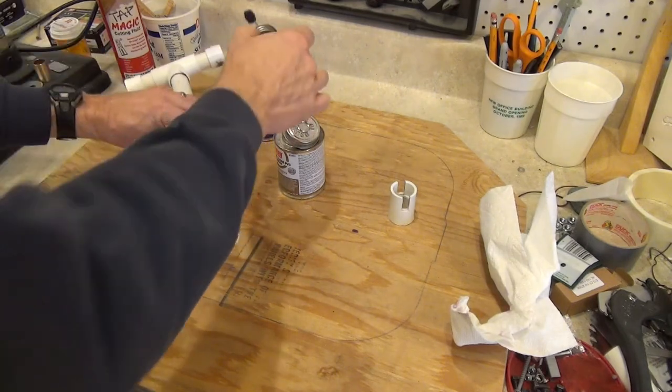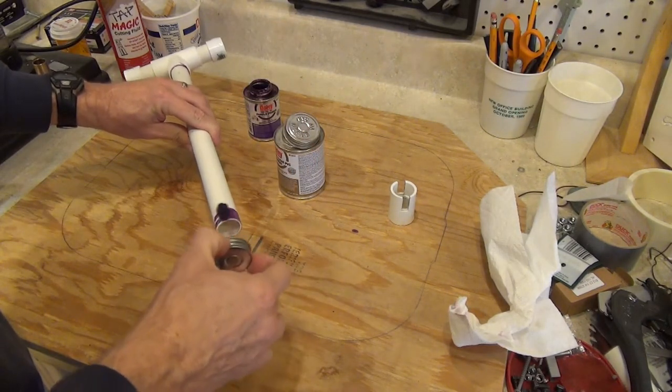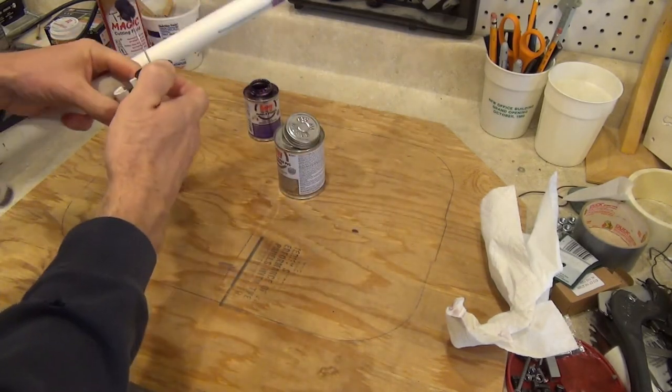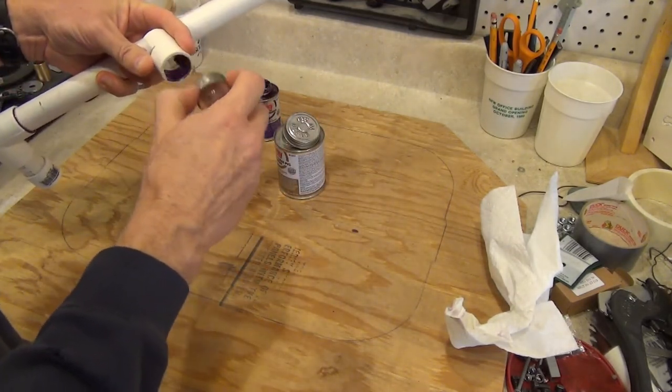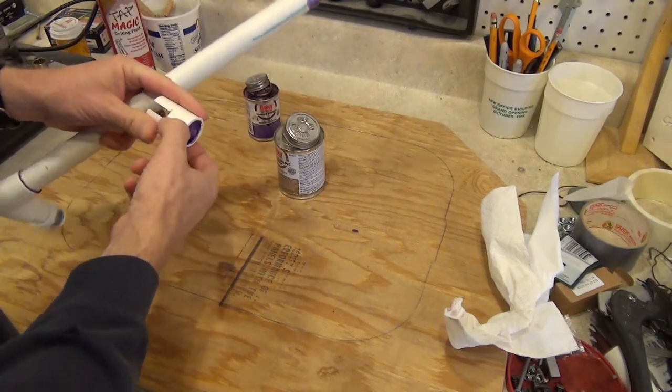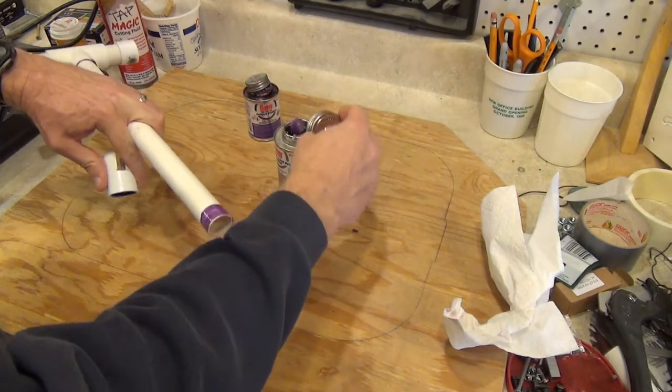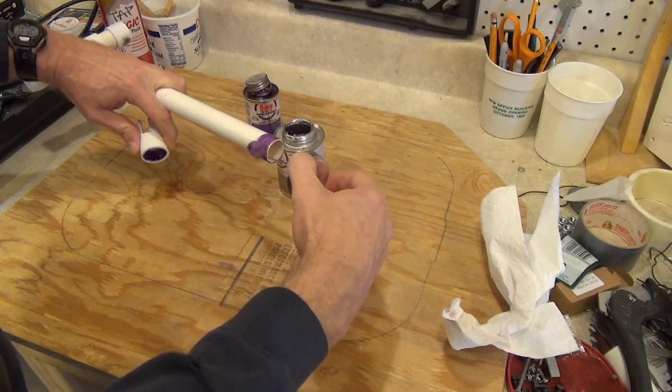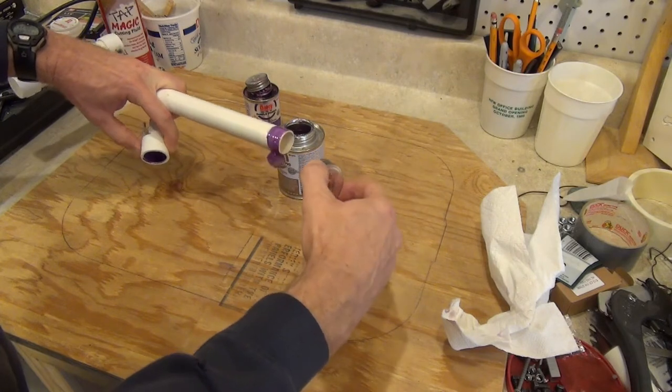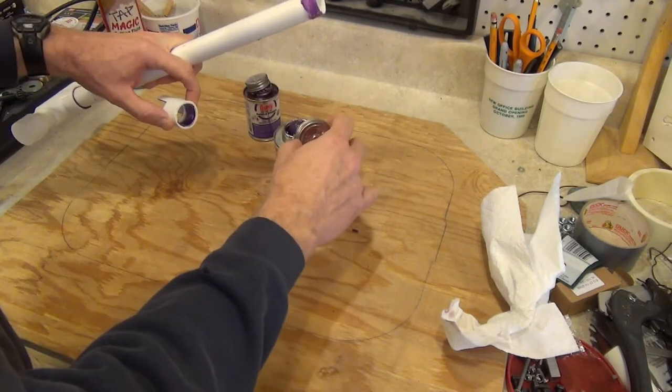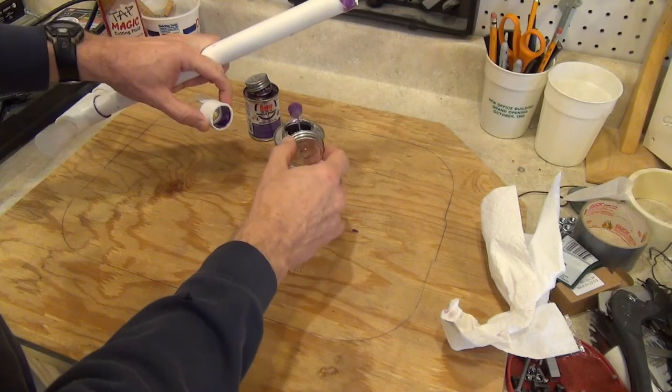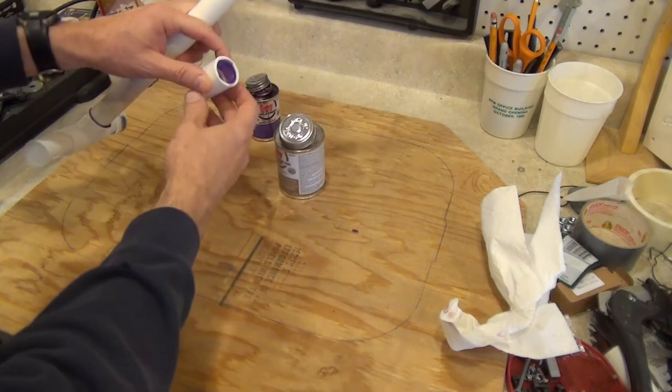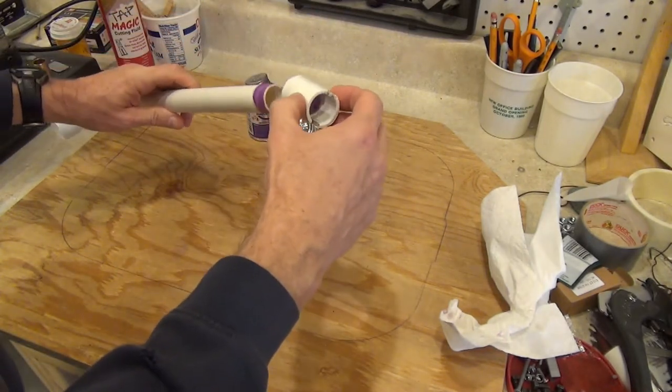Repeat this for the straight coupler and the other end of the pipe. I recommend aligning the slots with the T-handle.